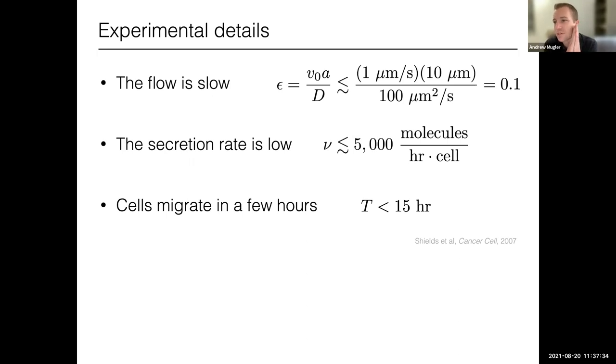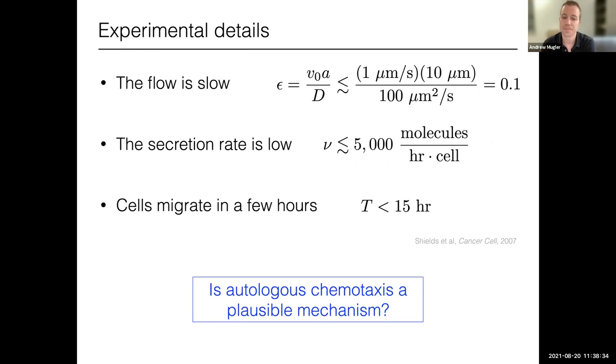So, when the students I showed you and me started sort of digging into this fascinating study, we noticed a few curious facts. One is that the flow is extremely slow, and that can be quantified by a dimensionless number called the Peclet number, which is the ratio of sort of ballistic effects due to the flow and diffusive effects. And that's less than one, it never really gets much above one-tenth. And so, from that perspective, things are dominated, the molecular motion is dominated by diffusion. So, that seems challenging for this mechanism. The secretion rate is also slow. If you sort of crunch the numbers, you see that basically each cell is only secreting a couple thousand molecules per hour. And the whole process is observed over 15 hours, and so they sort of start migrating within a few hours. So, this is really only being handled by a few thousand molecules with a diffusion dominated space.